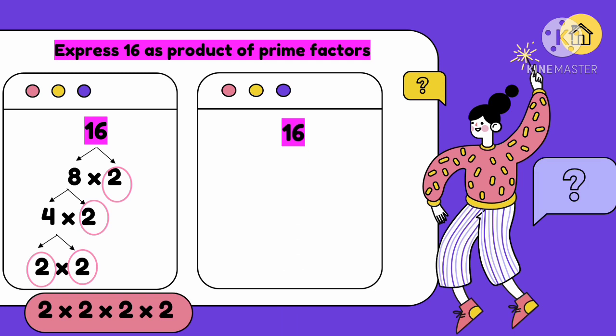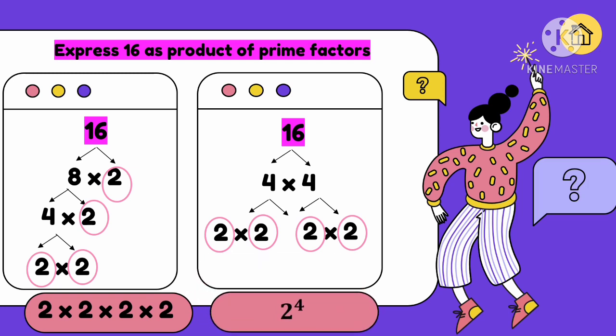Another example: 16 again. Think of factors aside from 8 times 2, like 4 times 4. Identify if they are prime or composite. The 4 and 4 are composite numbers, so we get the factors: 2 times 2 and 2 times 2. Circle all the prime numbers, then express as product of prime factors.